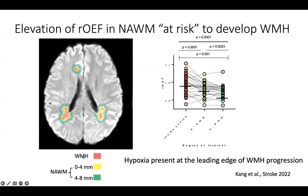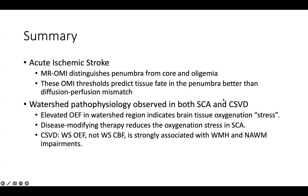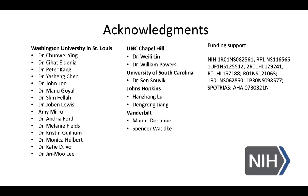OEF plus hypertension explain about 42.3% of the variance in mean diffusivity in normal appearing white matter, and OEF plus diabetes explain about 30% of the variance in normal appearing white matter fractional anisotropy. Looking spatially, there is a gradient of OEF abnormalities: the white matter hyperintensity region shows the highest OEF, neighboring regions show intermediate values, and regions farther away show lower values. In summary, OMI can identify penumbra in acute stroke; in sickle cell and CSVD we see watershed OEF elevation that changes with treatment; and OEF is a strong biomarker for CSVD progression. Thank you very much.